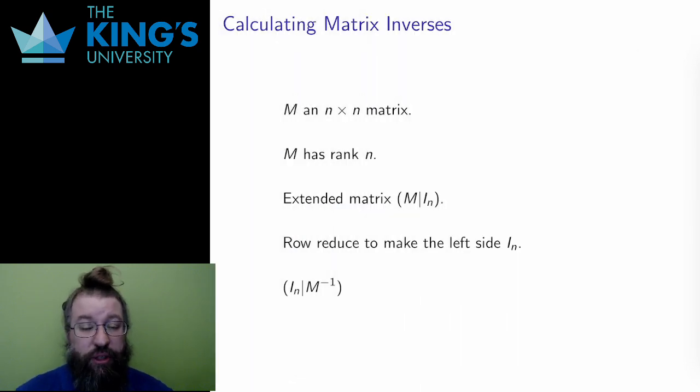So, some transformations, some matrices, have inverses. How do I calculate them? How do I know they are even possible?